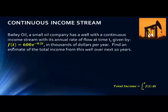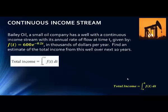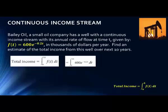The only thing we need to figure out is what the limits are — what period of time are we considering. Since it's over the next 10 years, we're going to do the integral from 0 to 10. When we plug this in, we have a simple integral with a constant in front which we can pull out, and we have e to a function of t. This is where we do substitution.